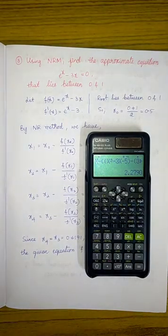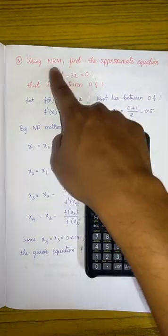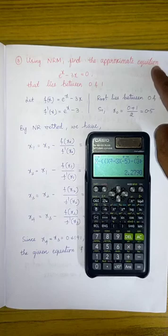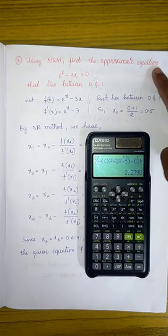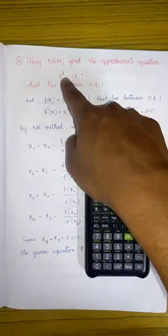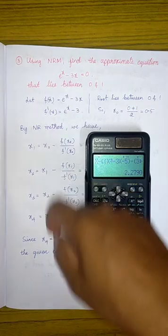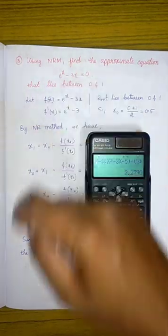Okay, so let us discuss one more problem on Newton-Raphson method. Using Newton-Raphson method, we have to find the approximate solution of the equation e^x minus 3x equal to 0, which lies between 0 and 1.